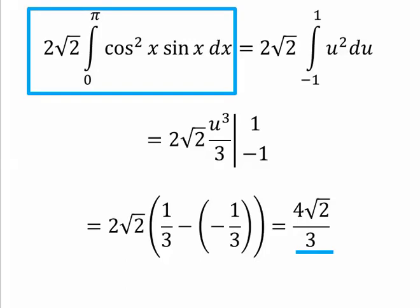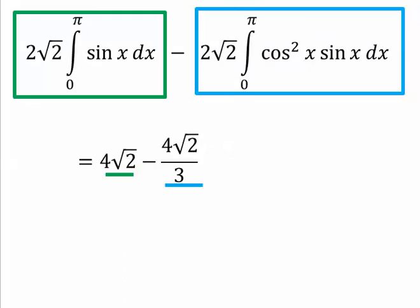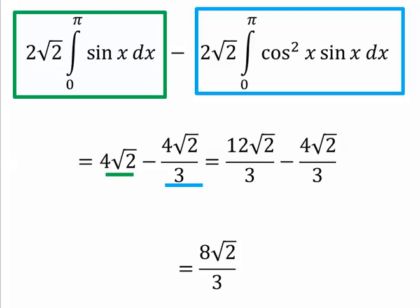And so my second integral is 4 radical 2 over 3. Putting the two pieces together, I get 8 radical 2 over 3. Take care.